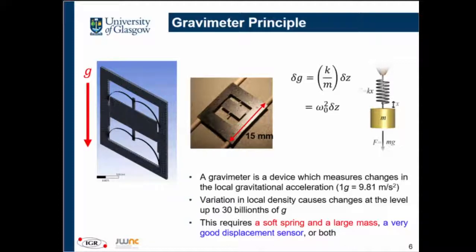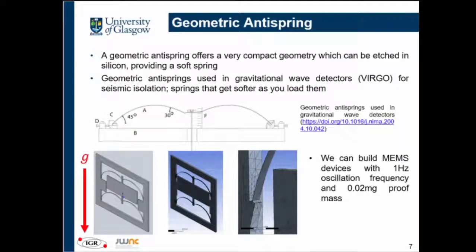To improve the sensitivity of such devices, you either want a soft spring and a large mass, or a very good displacement sensor, or both. Usually you are limited by your displacement sensor. So you want to have a very soft spring and a large mass — but we also want a packaged device, so we can't literally have kilos of mass. We took another approach: we used something called geometric anti-springs to reduce the stiffness of our device.